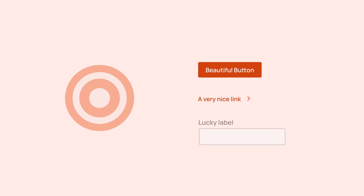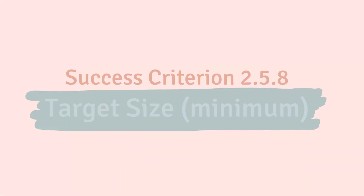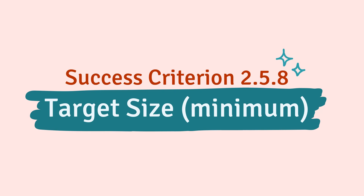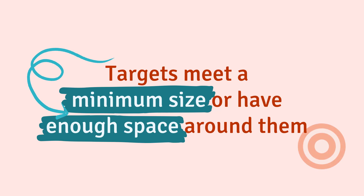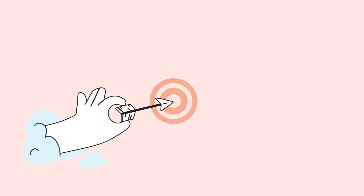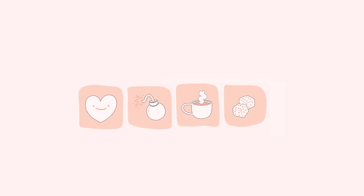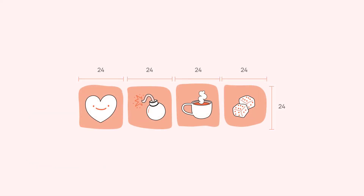Interacting with UI components like buttons, links, or form fields is no different. Success Criterion 2.5.8 target size minimum is about making sure that targets for interactive elements meet a minimum size or have enough spacing around them. People who may have trouble with precise movements can interact with larger targets more easily than smaller ones. The simplest way to meet this criterion is to make sure the target size for interactive elements is at least 24 by 24 CSS pixels.